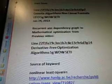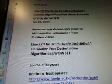The keyword recurrent and dependency graph led to mathematical optimization, and that was from our previous video, which was line 22F1FA, 19C3M, 1B7C8E, 13C9C6D, 3P14.